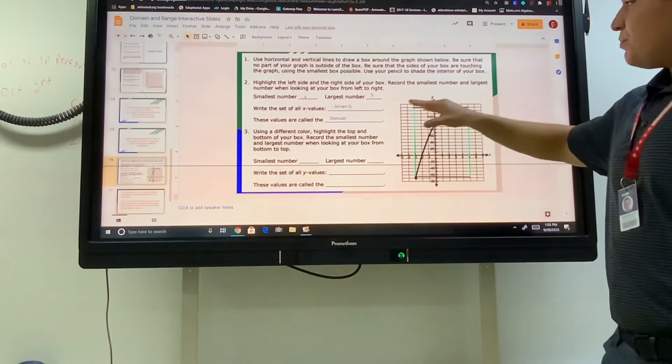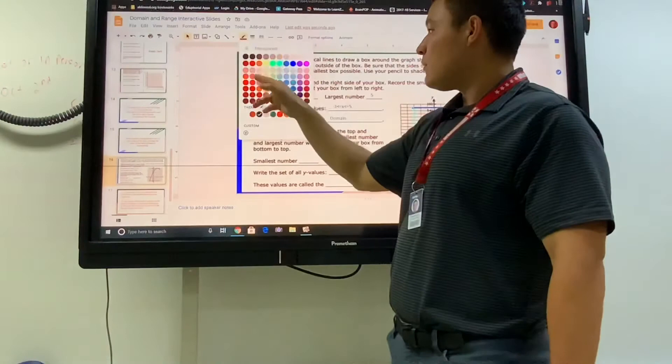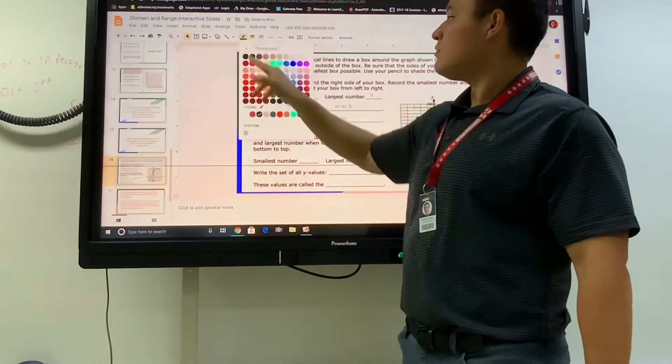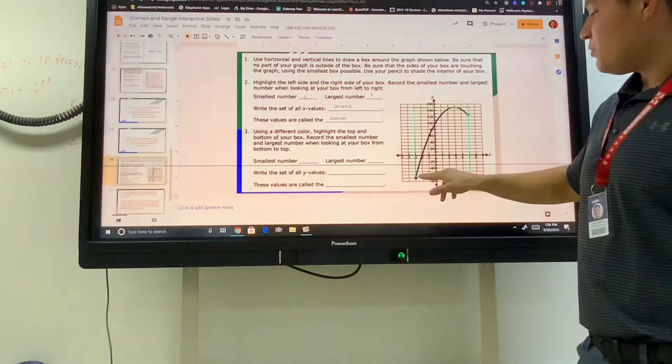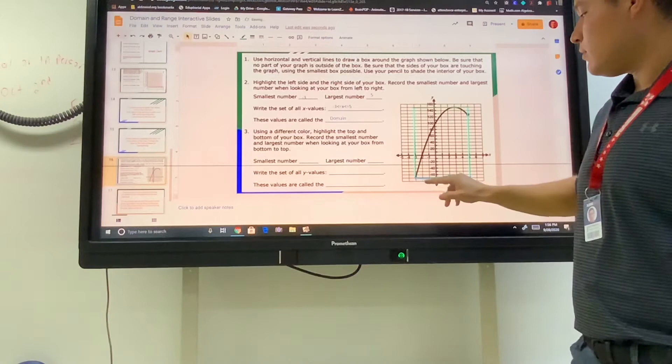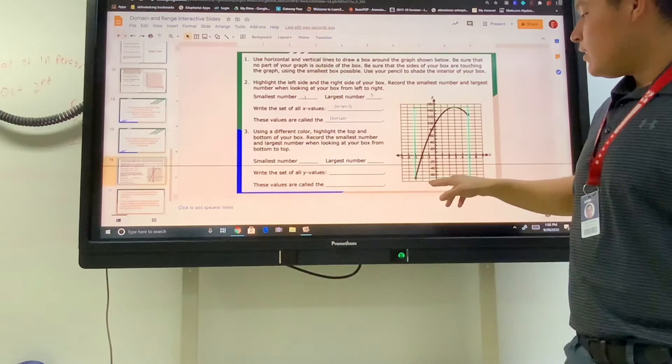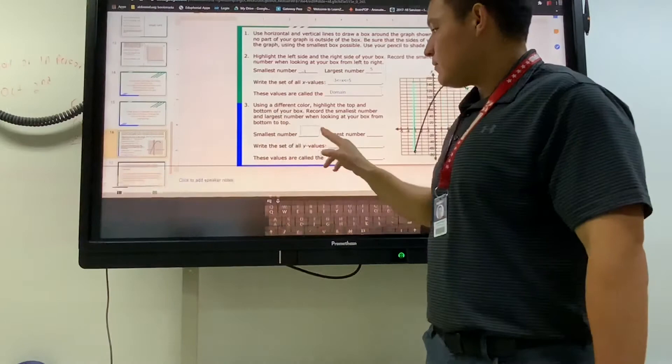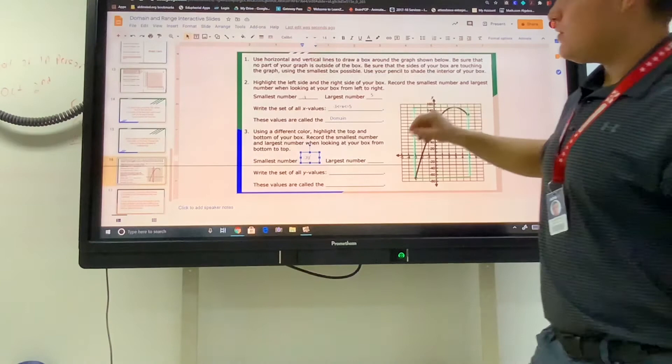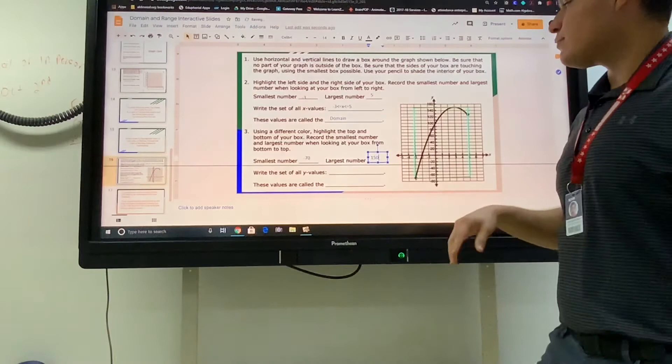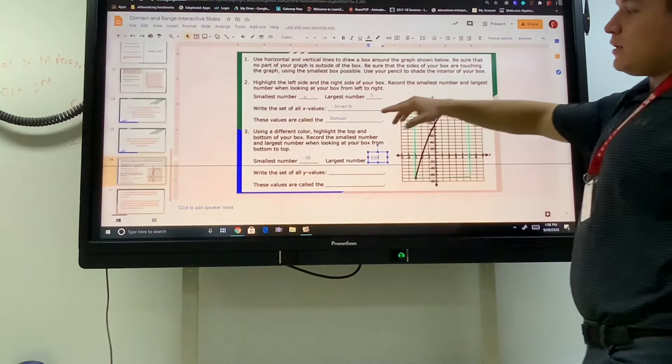Now let's change the top and the bottom part of this box. The top part, let's make it green. Bottom will also make it green. Record the smallest number from bottom to top. The smallest number down here, even though I kind of missed it, let's move it so that it touches. The smallest number is in between negative 60 and negative 80. Halfway between 60 and 80 is 70, so the smallest number is negative 70. The largest number, that's up here for y, and between 140 and 160 is 150.